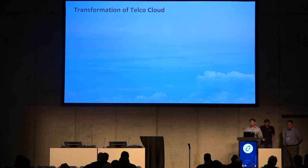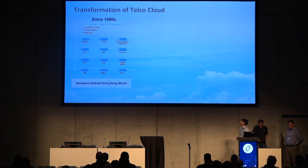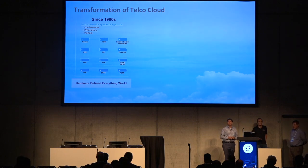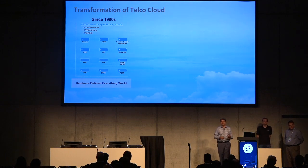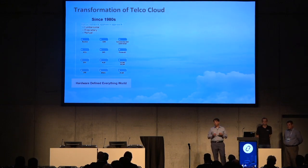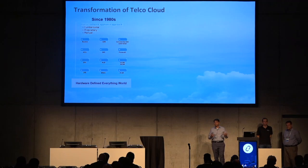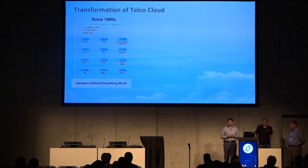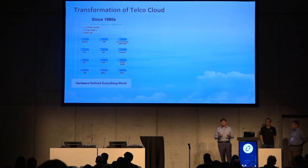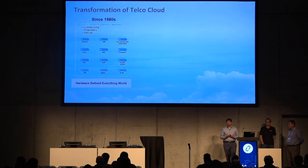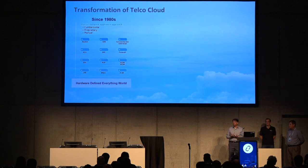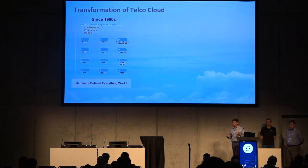For a long time since the 1980s — almost 40 years — we've been building networks in a monolithic manner, using proprietary purpose-built appliances for everything from layer 1 to layer 7: routers, switches, load balancers, firewalls, CDN, whatever you need. That's called a hardware-defined-everything world where hardware is king. There's no virtualization, no disaggregation, no flexibility — it's a very monolithic model.